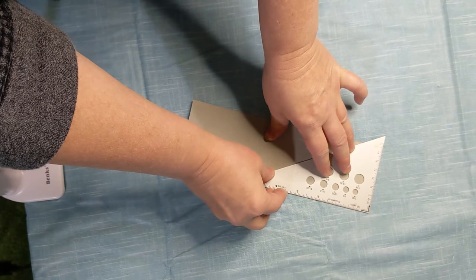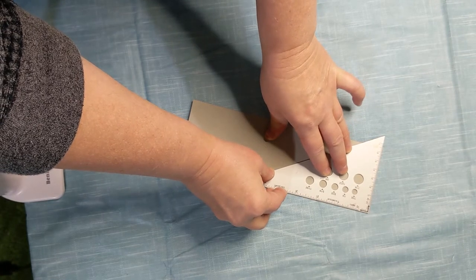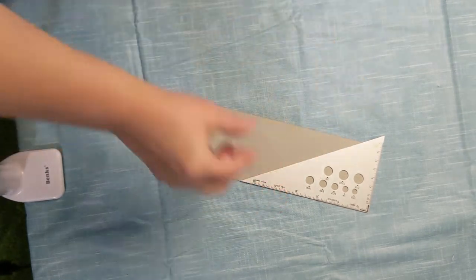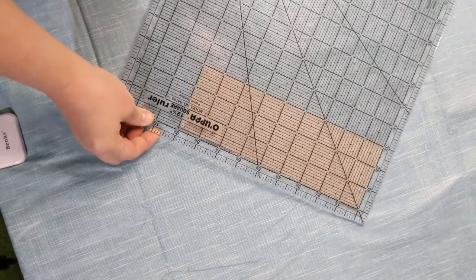Make sure the ends of your paper are square using a triangle or a clear quilter's ruler.